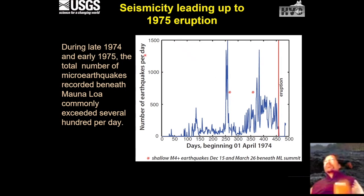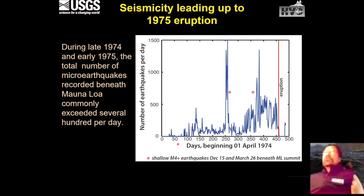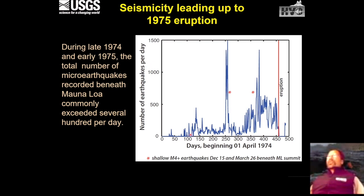Seismicity leading up to the 1975 eruption is shown here with the number of earthquakes per day on the y-axis and a timeline on the x-axis. Seismicity ramped up fairly quickly — over a period of quiescence or background, as Mauna Loa started reawakening, we had a few hundreds of earthquakes per day. Prior to the eruption, there were days where earthquake counts on a daily basis exceeded 1,000 earthquakes.